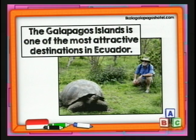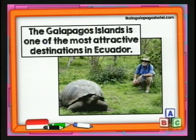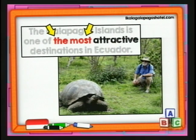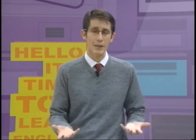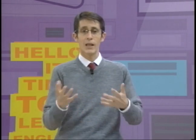'Galapagos Islands is one of the most attractive destinations in Ecuador.' Dice que las islas Galápagos es uno de los destinos más atractivos en Ecuador. ¿Dónde está el superlativo? Está justo ahí: 'the most attractive'. Ya hemos dado una pequeña revisadita a los superlativos y hemos estado hablando un poco de natural wonders. Pero lo que vamos a ver a continuación es muy importante para entender cómo se realizan este tipo de preguntas.